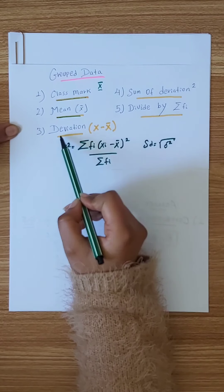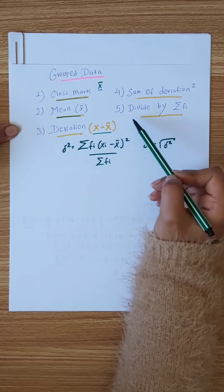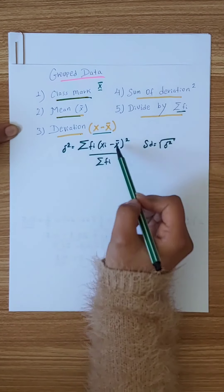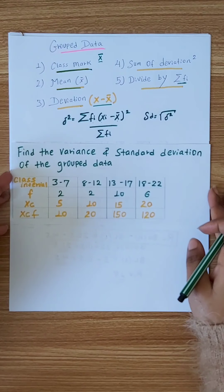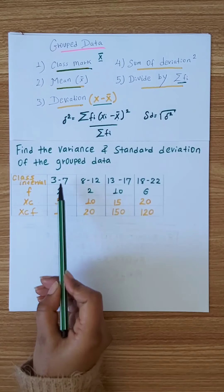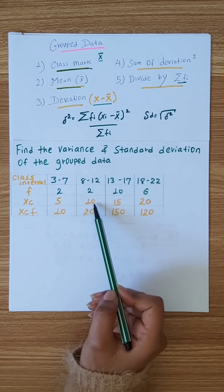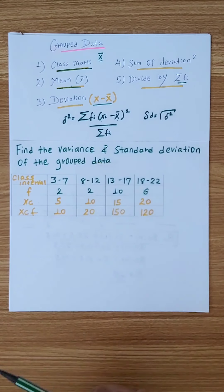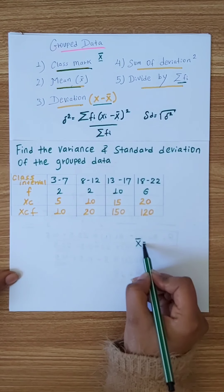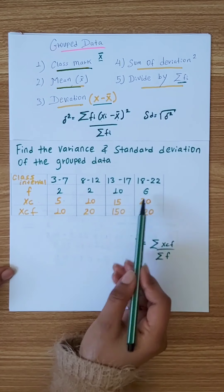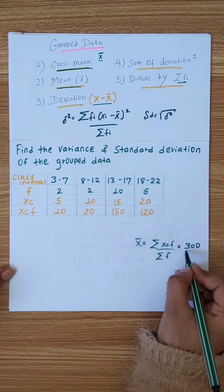The class mark will represent the class interval, and the class interval will represent the class mark. The class interval will be divided by the sum of the frequency. The class mark is used to represent each class interval in grouped data calculations.